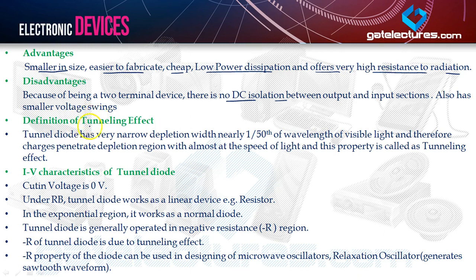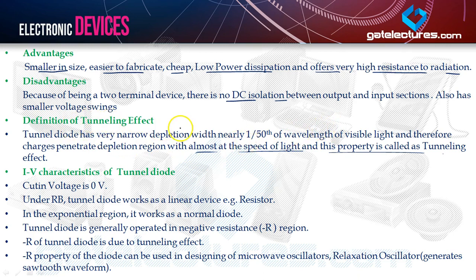The tunnel diode exhibits a tunneling effect. The tunnel diode has a very narrow depletion width — nearly 1/50th of the wavelength of visible light — and therefore charges penetrate the depletion region at almost the speed of light. This property is called the tunneling effect: the movement of charge carriers across the junction at the speed of light.